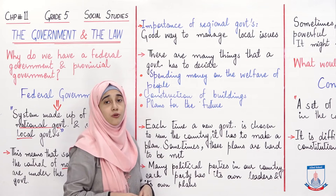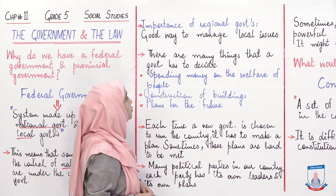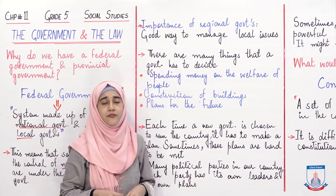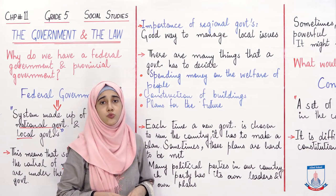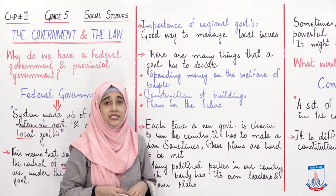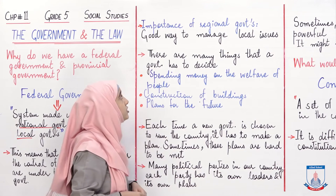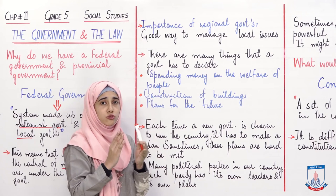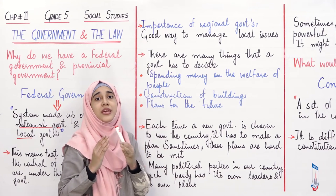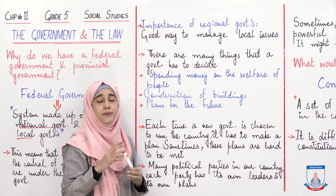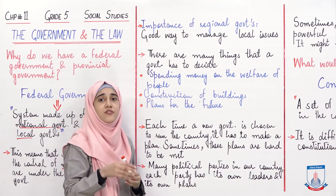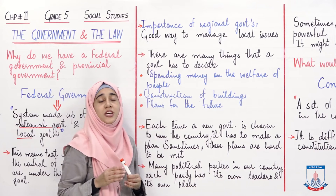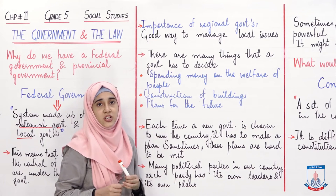Ab hum baat karte hai importance of regional governments ke baare mein. Yeh ek good way hai to manage local issues. Jab bari bari countries hoti hain, wahaan aap sirf ek government ke through puri country ko control nahin kar sakti. Is liye behtar hota hai ke aap regional governments banao - apni ek main government ko smaller portions mein divide karo aur different regions ki different governments banao, taaki chote regions ko bhi achhe se control kiya ja sake.